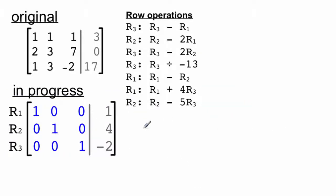And at this point, we've got a row-reduced echelon form. So our first value for x is 1, our value for y is 4, and our value for z is negative 2.